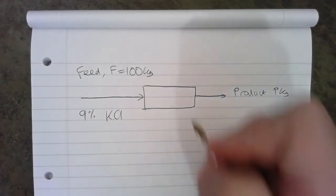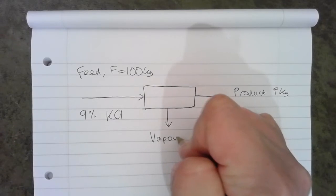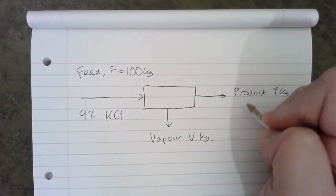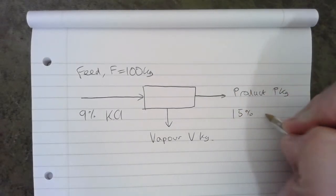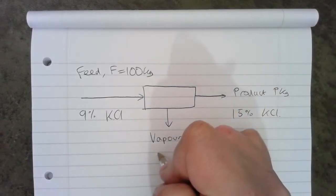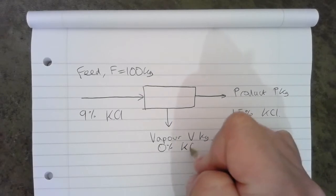And there is also a vapour being produced, which we'll say is V kilograms. We also know that the product is 15% KCl and the vapour is going to be 0% KCl.